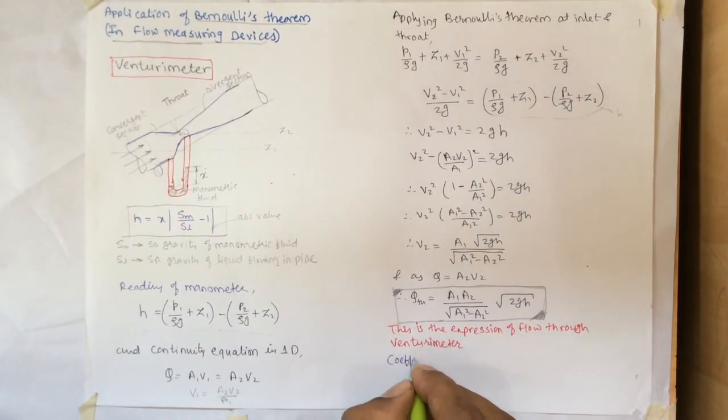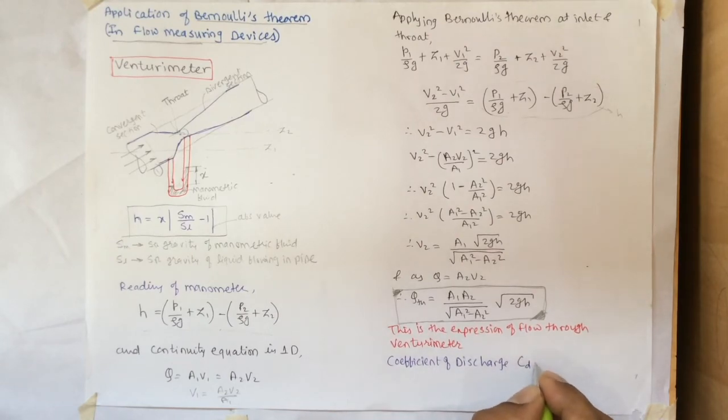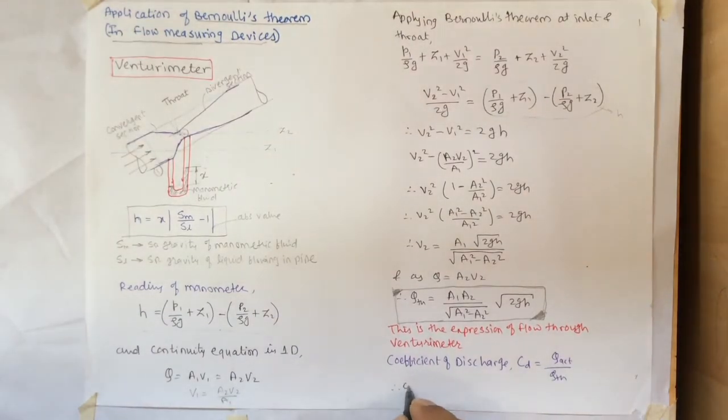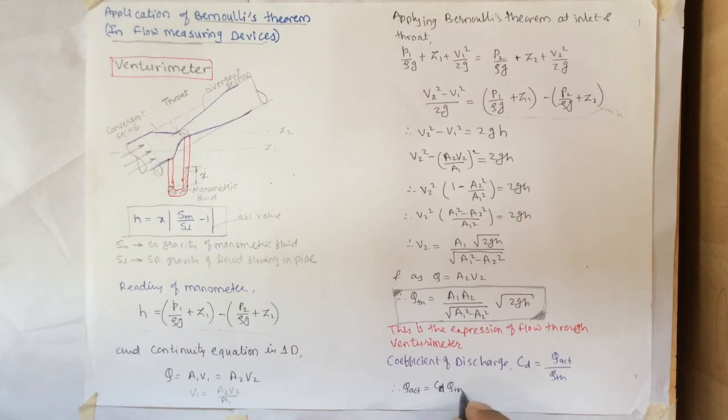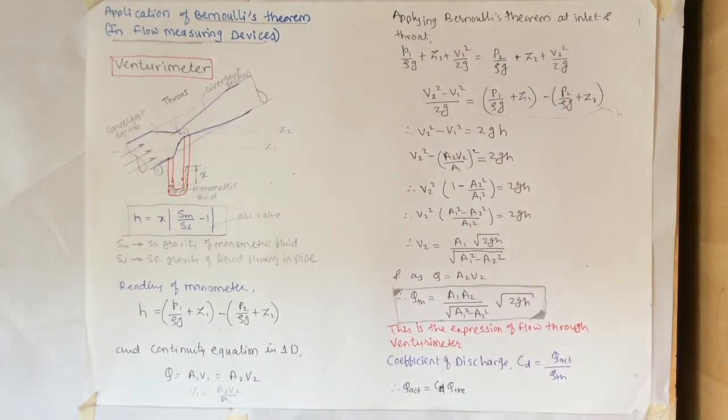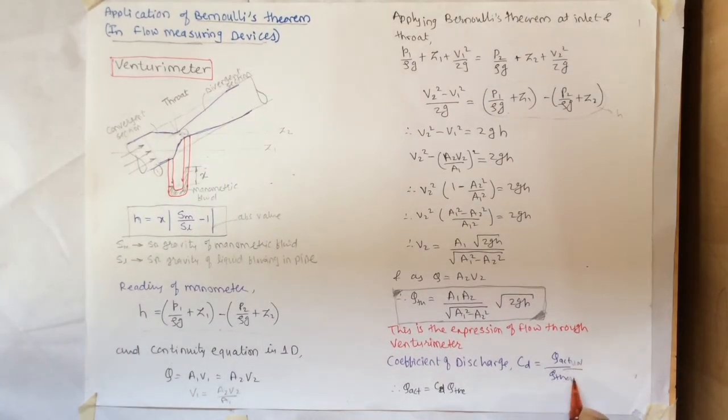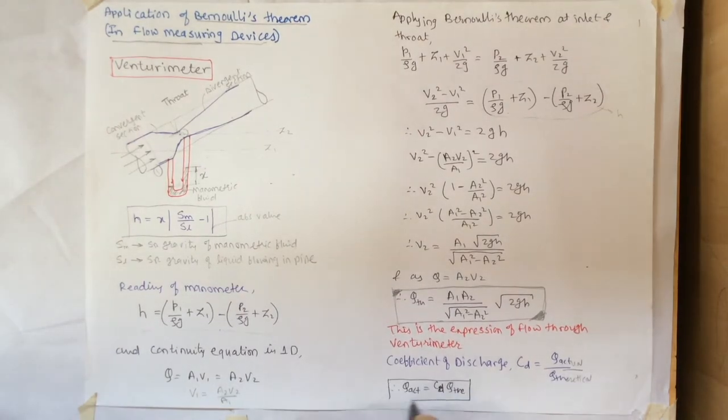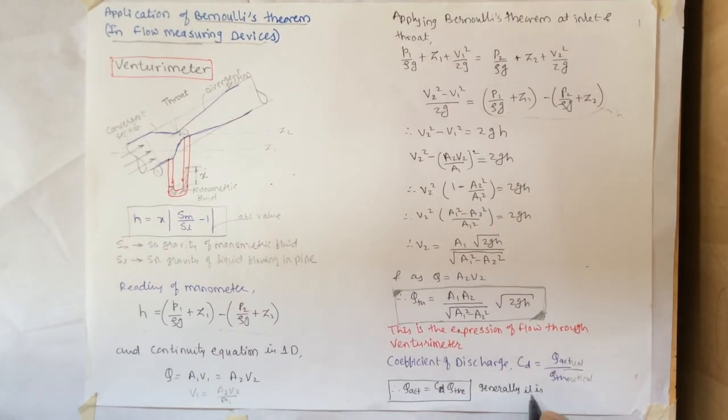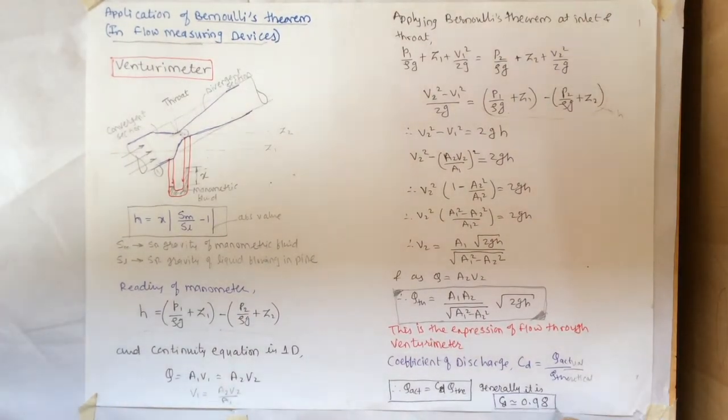We can define now one term which is called coefficient of discharge, C suffix D, which we can get as Q actual divided by Q theoretical. So we can write Q actual equals Cd times Q theoretical. The value of Cd is generally taken as 0.98.